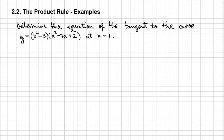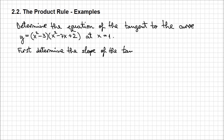In order to determine the equation of the tangent, we're going to determine the slope of this tangent and one point that belongs to that line. Let's start by first determining the slope of the tangent, which is nothing else than the derivative of our function. To be more precise, we need the derivative — the slope — at that point when x is 1. So the first thing I need to determine is the expression of the derivative.